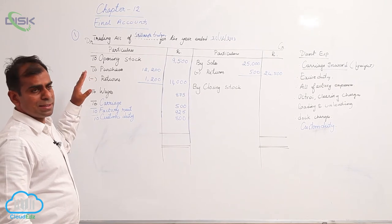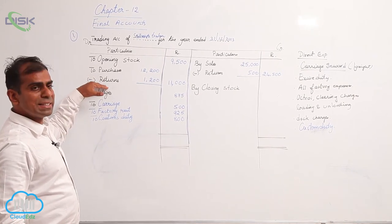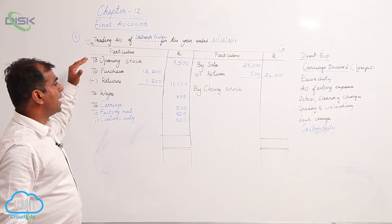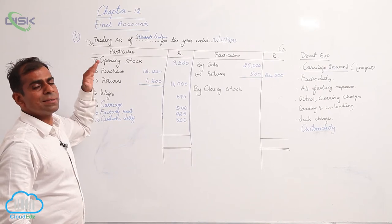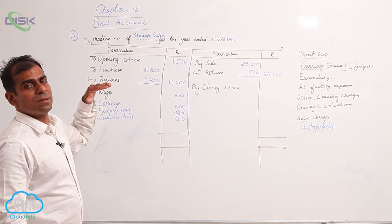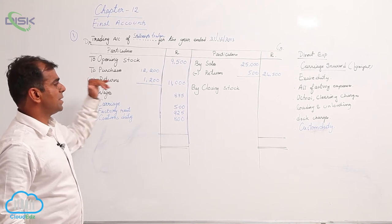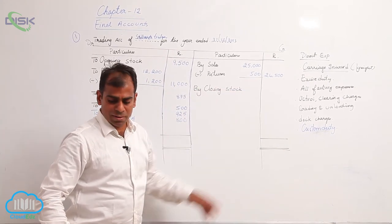So because purchases are not adjusted we are going to take closing stock on the credit side 3,100.